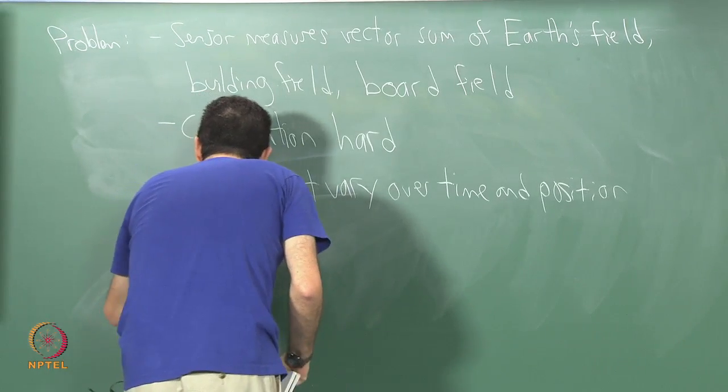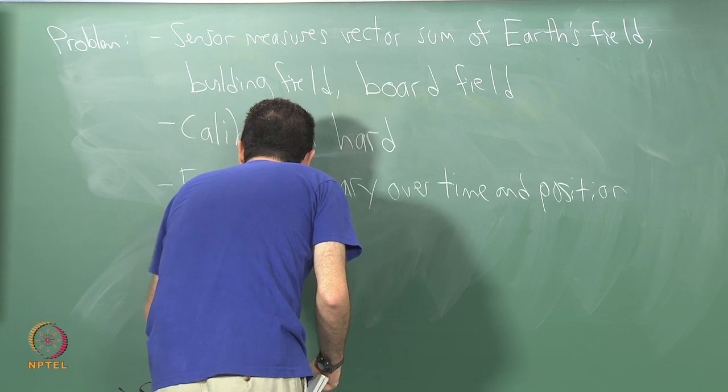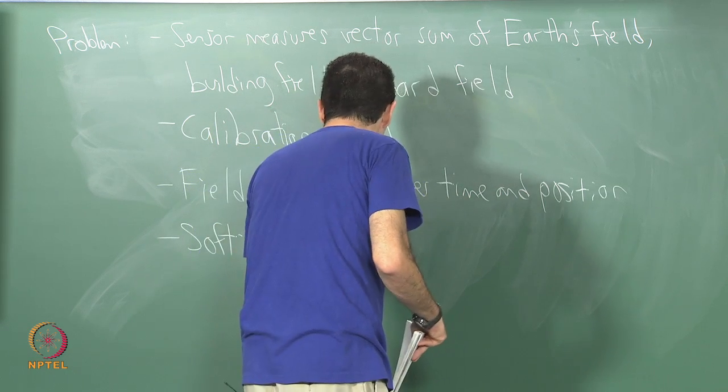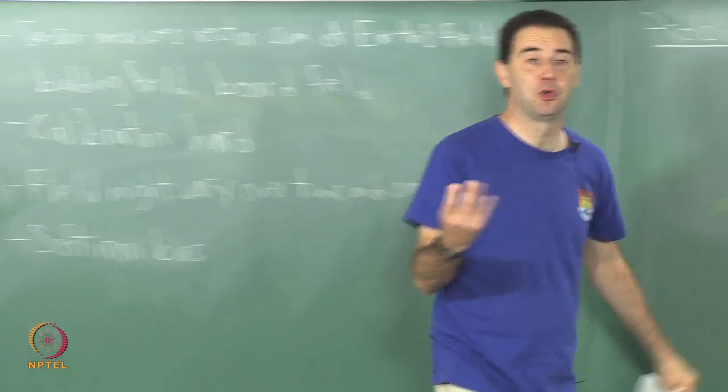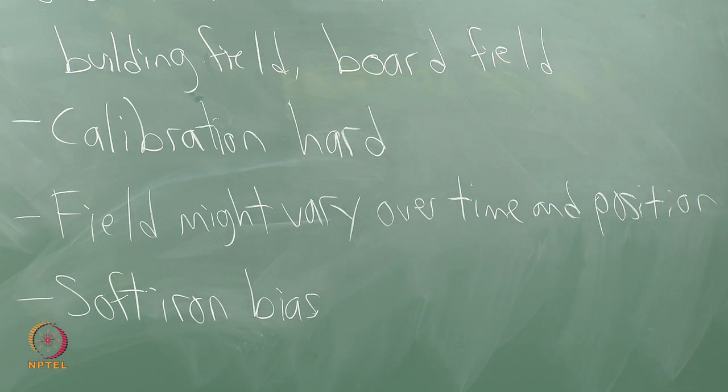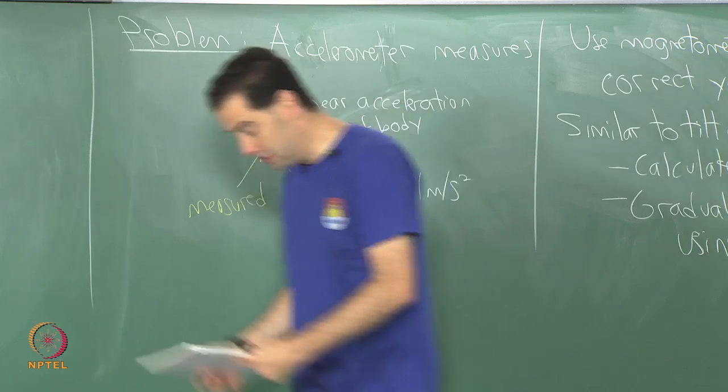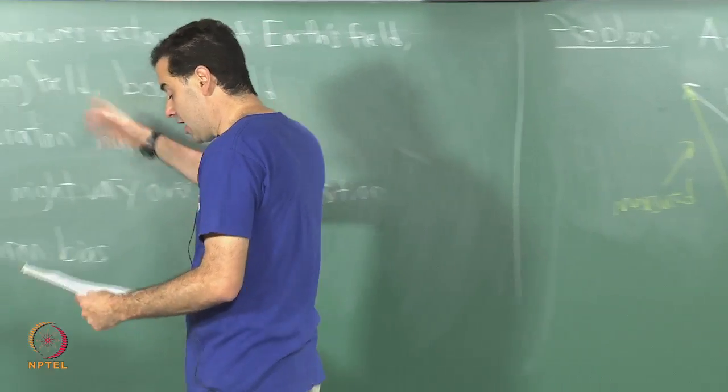And there is also something called soft iron bias, which I will not cover here, but which induces a kind of elliptical distortion on the magnetic field readings based on ferrous materials in the vicinity of the sensor. All these end up being complicated challenges.